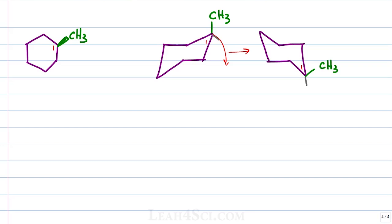If we had a second substituent, you would do the same thing. For example, if we have another methyl also in the up position, continue numbering two and three clockwise. This is important: if your hexagon is clockwise, your chairs have to be clockwise; if the hexagon is counter-clockwise, the chairs have to be counter-clockwise. We only need to number as far as our substituents go — one, two, three. Where is methyl on carbon three? The up position — axial on the left structure and equatorial on the right structure.